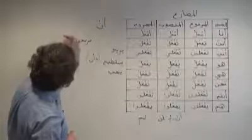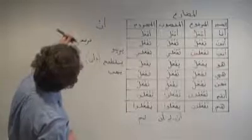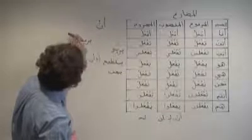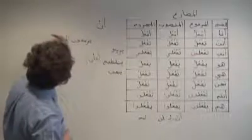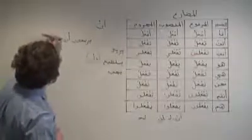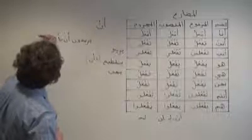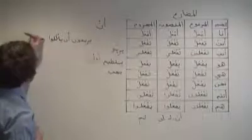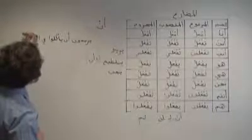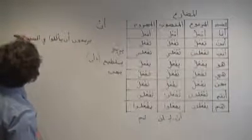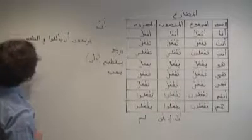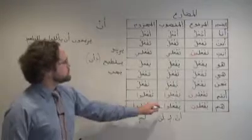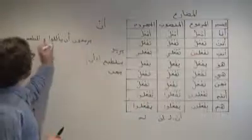يريدون أن يأكلوا في المطعم في المطعم. So after أن, we need to use our منصوب form of that conjugated verb.